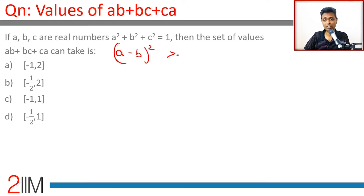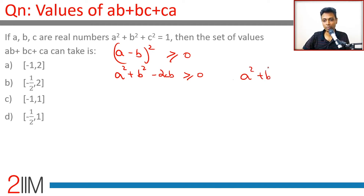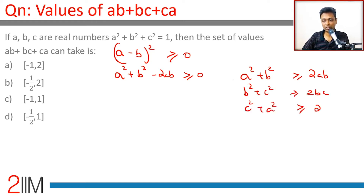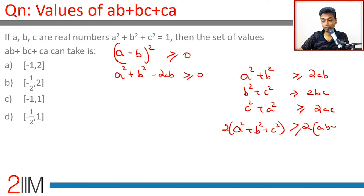Consider (a - b)² ≥ 0, which gives a² + b² - 2ab ≥ 0, or a² + b² ≥ 2ab. Similarly, b² + c² ≥ 2bc and c² + a² ≥ 2ac. Adding all three gives 2(a² + b² + c²) ≥ 2(ab + bc + ca).